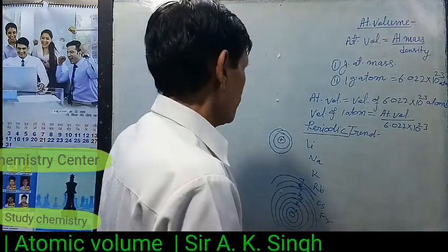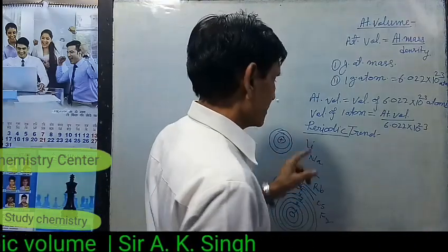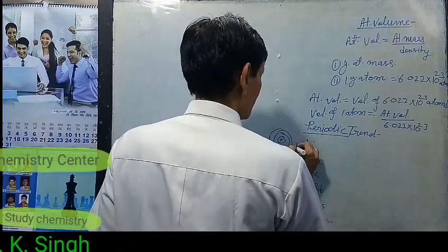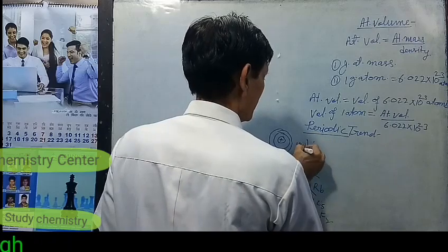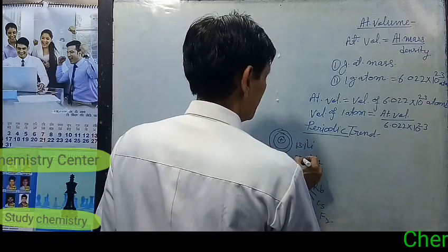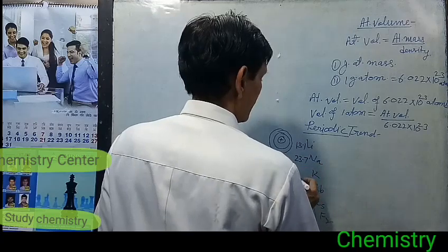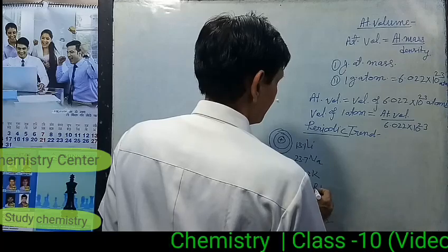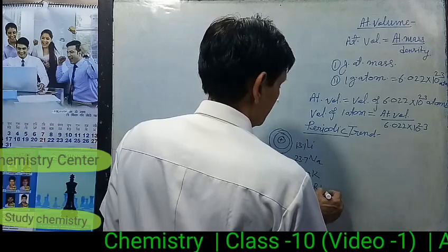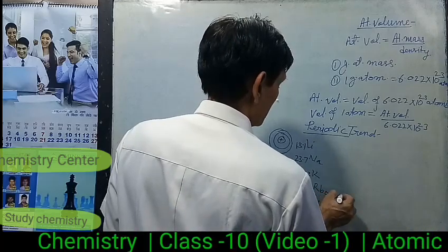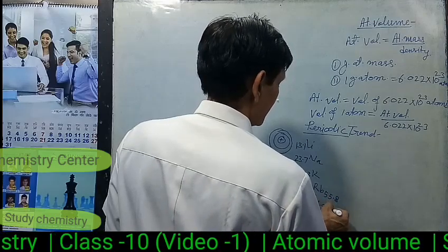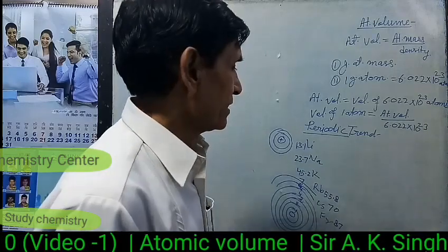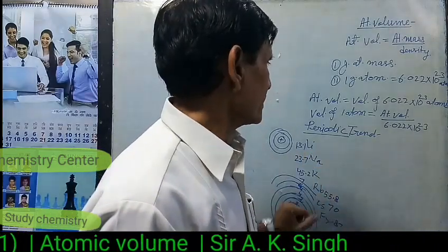We can verify this with numerical values: lithium has an atomic volume of about 13.1 cc, sodium 23.7 cc, potassium 45.2 cc, rubidium 55.8 cc, cesium 70 cc, and francium around 87 cc.